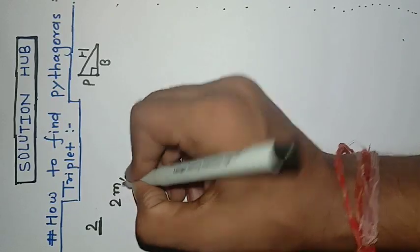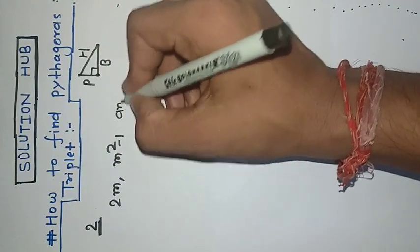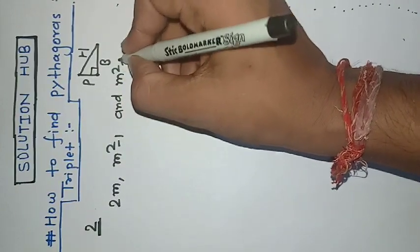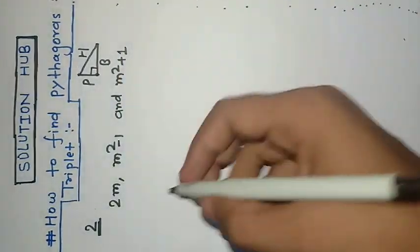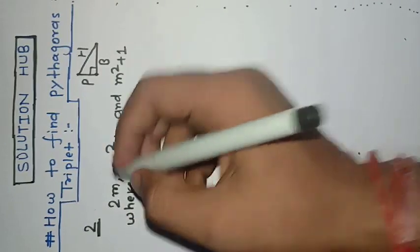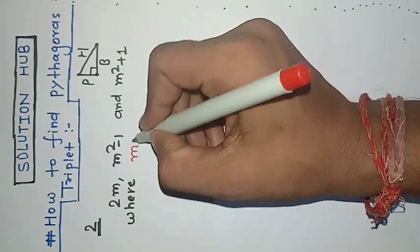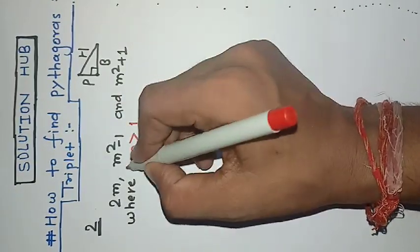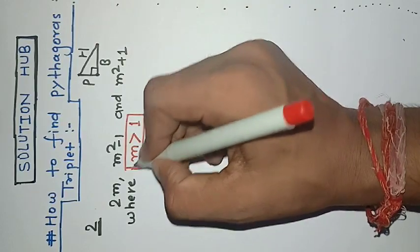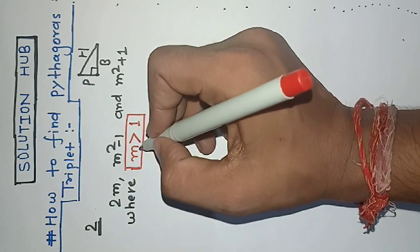The formula is 2m, m squared minus 1, and m squared plus 1, where there is a condition that m should be greater than 1.